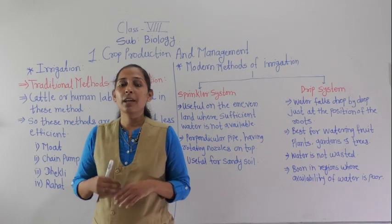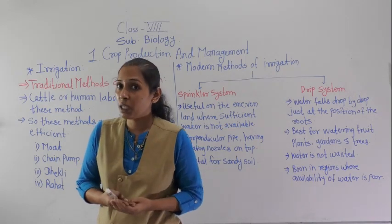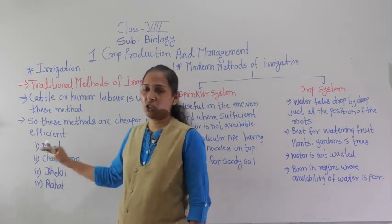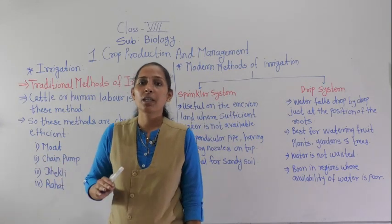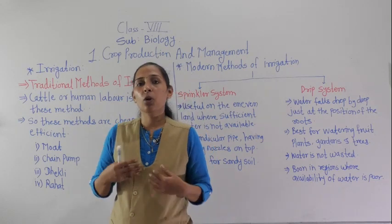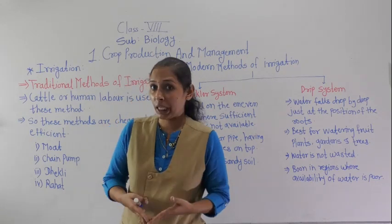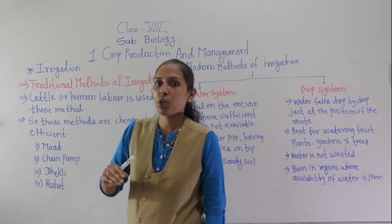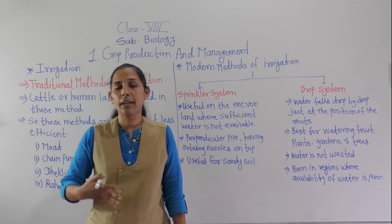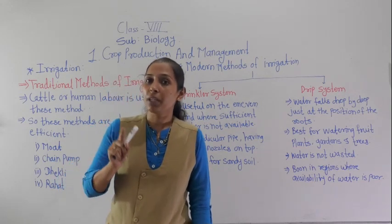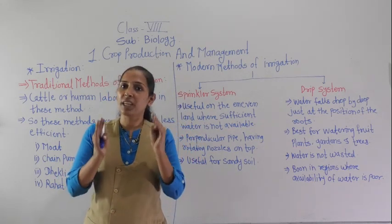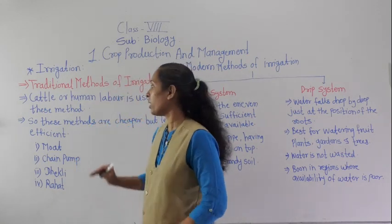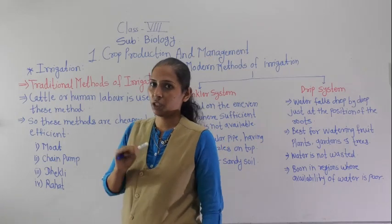Why did people stop using these methods? Because these methods are cheaper but less efficient. These methods did not cost much money, but they are not that efficient. Irrigation means we have to provide water at regular intervals while also controlling the wastage of water. For that reason, these traditional methods were not efficient enough.